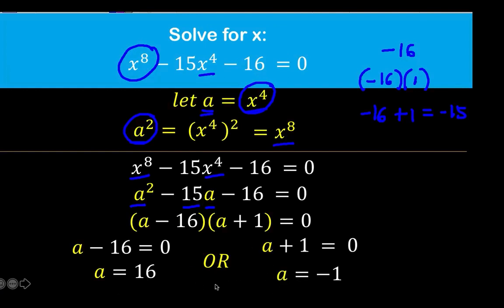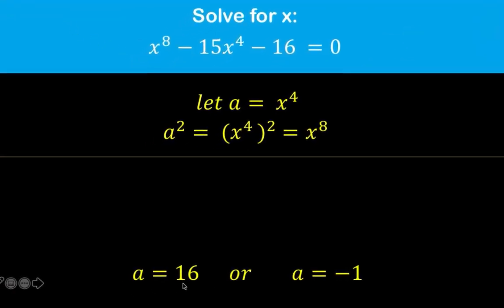At this point, what we have is just the value of a. We do not know yet what is the value of x, and that is now what we are going to solve for in the next step. So knowing now that a equals 16, or a equals negative 1, we can now substitute this value for the value of a, which is a equals x to the 4th.